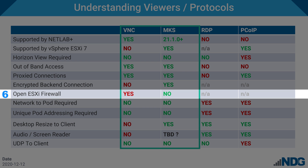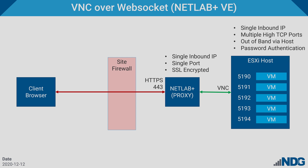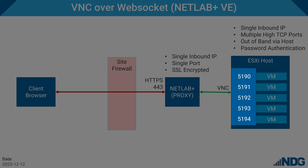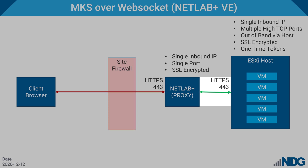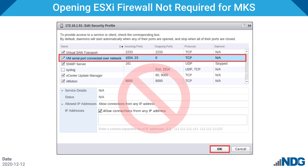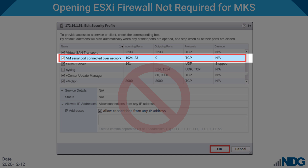Number six, MKS does not require the ESXi firewall to be opened. Previously, NetLab's VNC implementation assigned one TCP port for each virtual machine, which required a wide range of ports to be opened in the ESXi built-in firewall. MKS, on the other hand, just uses HTTPS on port 443, which is already opened by the ESXi firewall. If you're setting up a new ESXi host running version 6 or later, the step to open the firewall is not required, provided that you are only going to use MKS with the host.